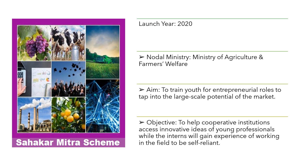Under which ministry does this scheme come? This scheme comes under the Ministry of Agriculture and Farmer Welfare. The main aim of the scheme is to train the youth for an entrepreneurial role, to tap into the large-scale potential of the market — in other words, to convert youth into entrepreneurs and make them aware of the potential of both the Indian and world markets.